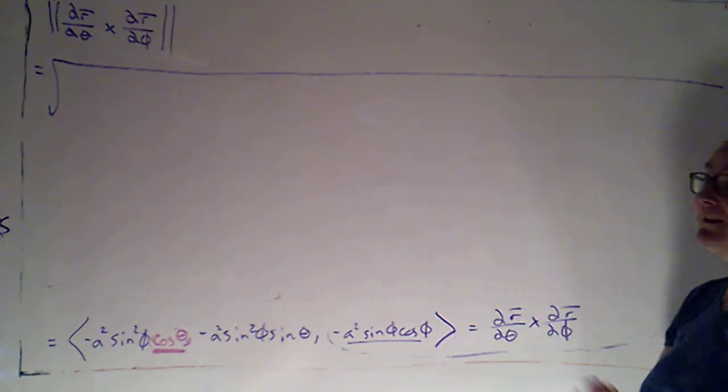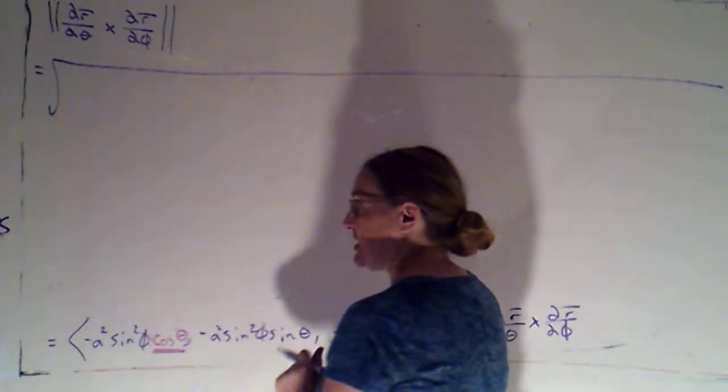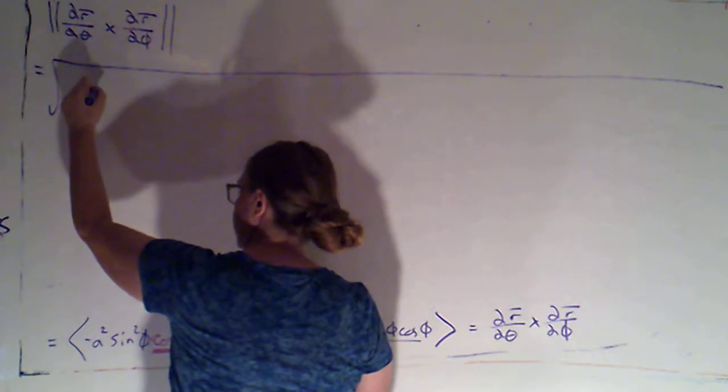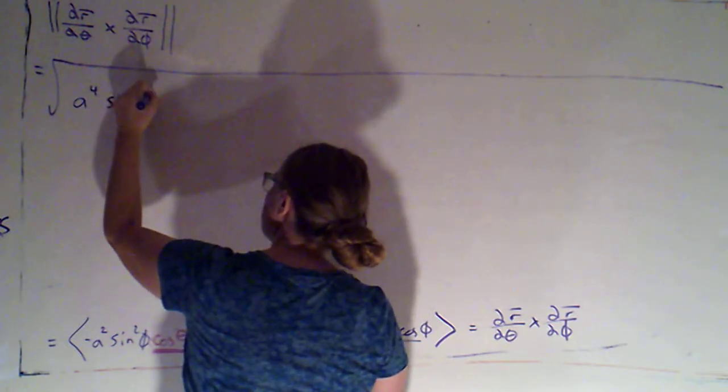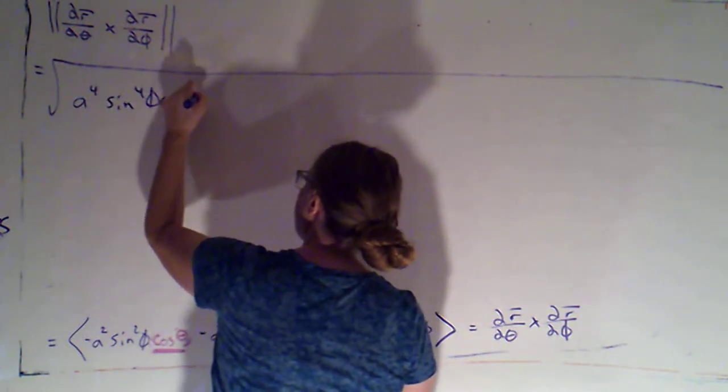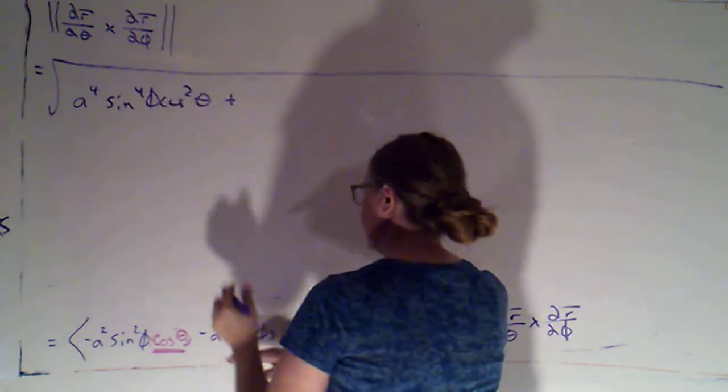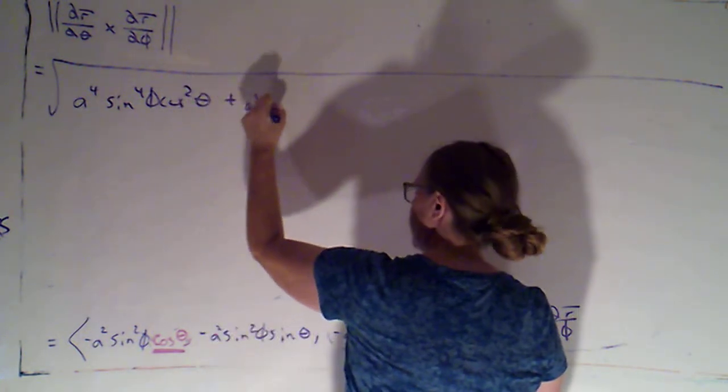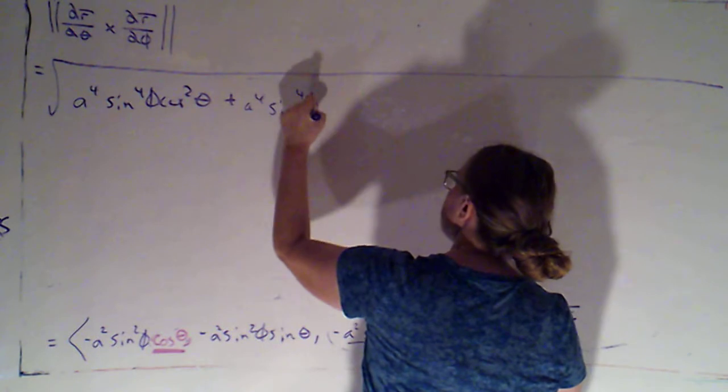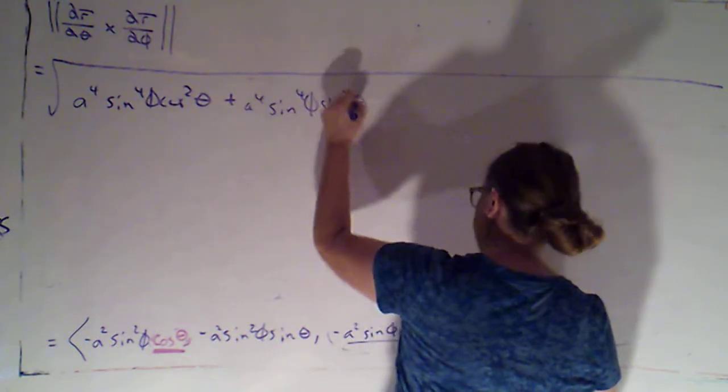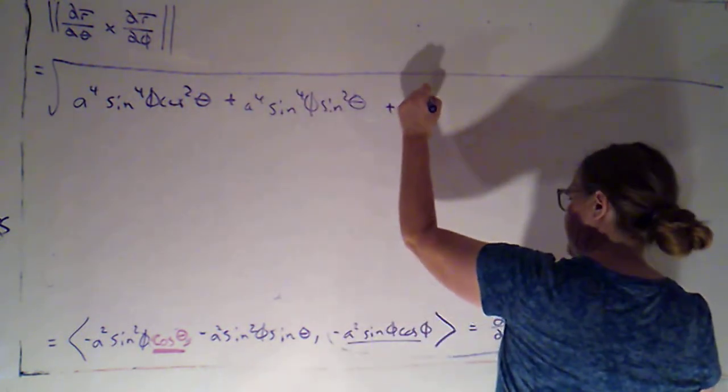All right, so I need to square this, so I'm just going to square each factor. So I'm going to get a to the fourth sine to the fourth phi cosine squared theta plus a to the fourth sine to the fourth phi sine squared theta plus a to the fourth sine squared phi cosine squared phi.